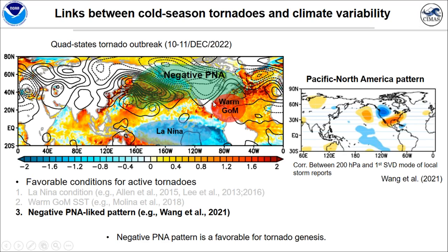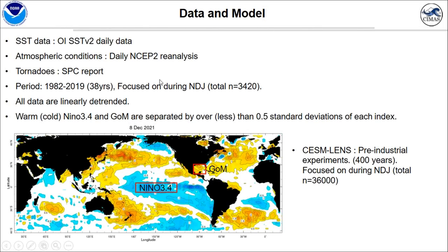And lastly, Wang et al. showed that using the singular value decomposition method, the first mode of the SVD of tornado activity is closely linked to a negative PNA-like pattern. Many previous studies suggest that each independent large-scale condition can affect tornado activity. However, there are few studies investigating the link among these three conditions. So we investigate the reason for the cold-state tornado outbreak and the physical mechanism using observation and model data.